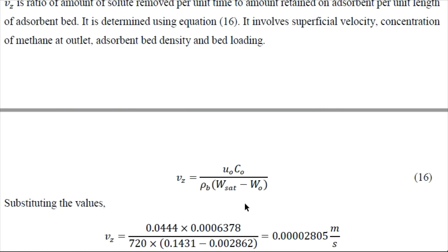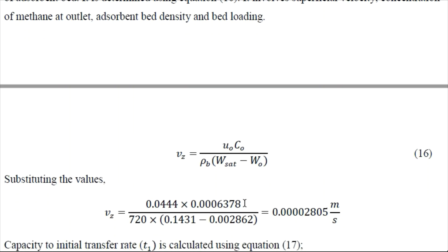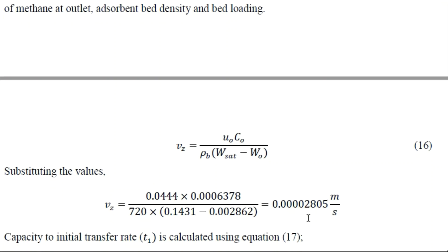So now we can determine the Vc using equation number 16. We can find the Vc value as 0.0002805 meter per second.